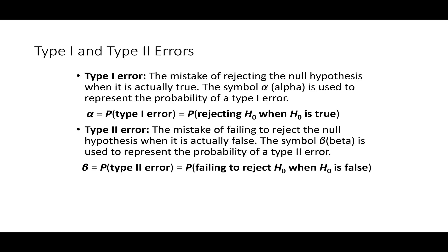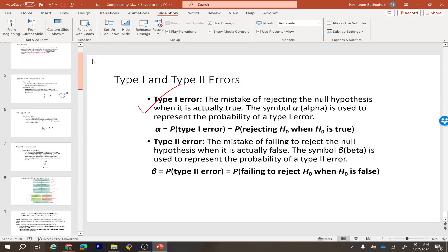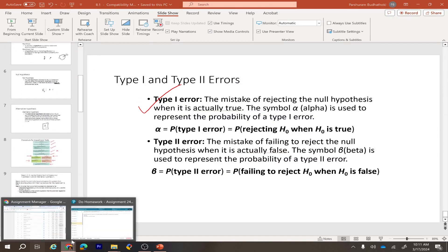We also introduce two types of error. Type 1 error — which equals alpha — is the probability of rejecting the null hypothesis when the null hypothesis is true. Type 2 error is the probability of failing to reject the null hypothesis when the null hypothesis is false. These are the key concepts for section 8.1. Now let's look at some examples.